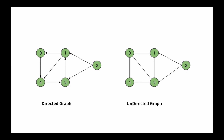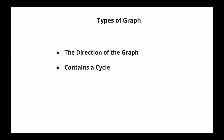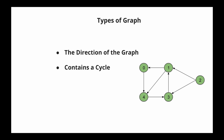Usually, if the direction of a graph is not mentioned, it is safe to assume that it is an undirected graph. Another factor to consider is whether there is a cycle in the graph. A graph that contains a cycle is called a cyclic graph, and one that does not contain any cycle is called an acyclic graph. In this graph, there is a cycle: node 0 points to node 4, node 4 points to node 3, node 3 points to node 1, and node 1 points back to node 0. So this forms a cycle.